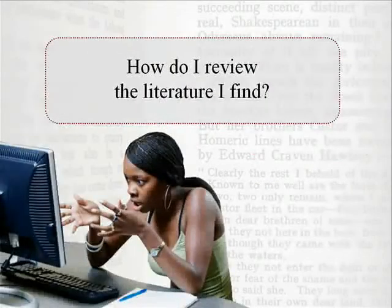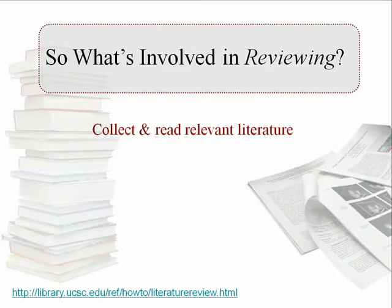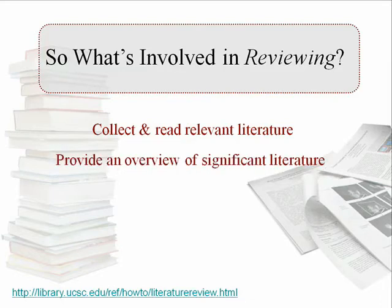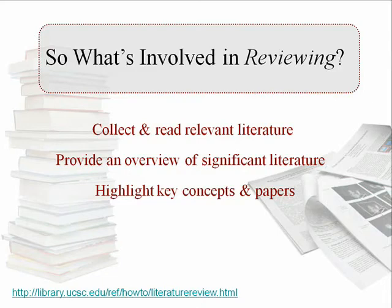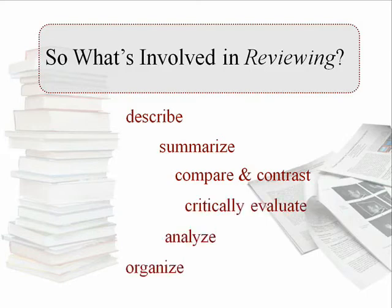At this point, you might be wondering: how do I actually review the literature I find? In the most general sense, it means that you collect and read all the relevant papers and other literature on your topic. You want to provide an overview, but also highlight key concepts and important papers. As you read, you may start by describing and summarizing each article, then start to make connections by comparing and contrasting those papers. You will also need to evaluate, analyze, and organize the information from your reading.